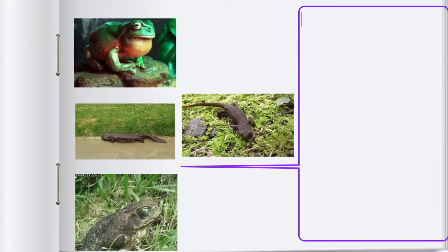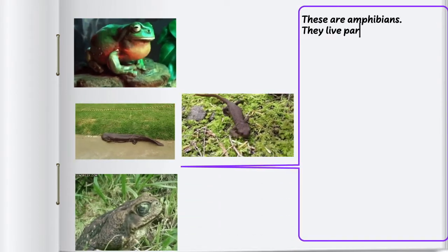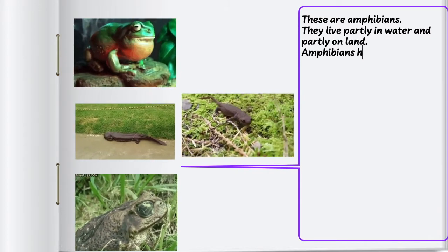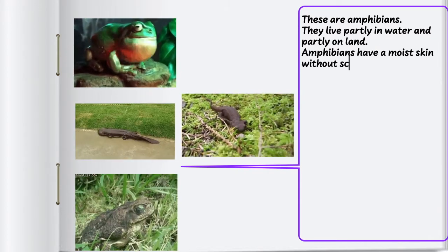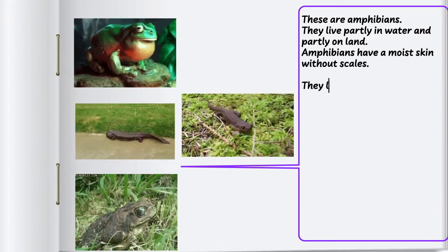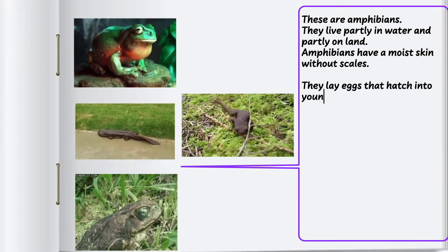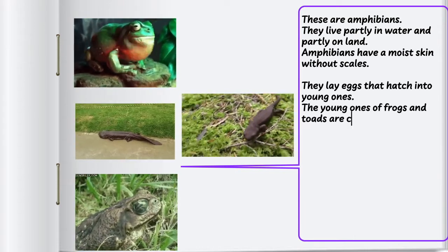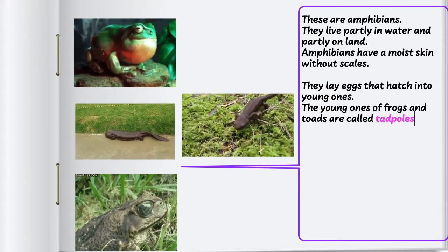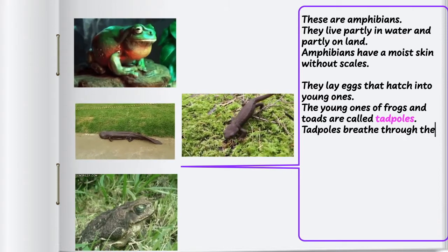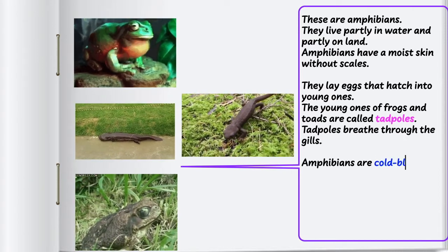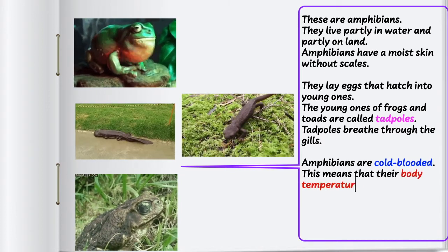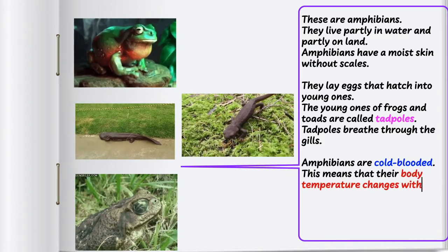These are amphibians. They live partly in water and partly on land. Amphibians have a moist skin without scales. They lay eggs that hatch into young ones. The young ones of frogs and toads are called tadpoles. Tadpoles breathe through the gills. Amphibians are cold-blooded, meaning their body temperature changes with that of the surroundings.